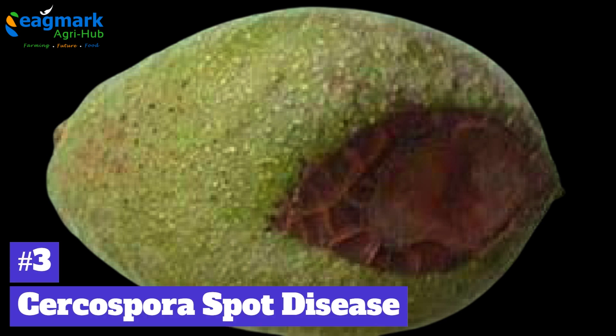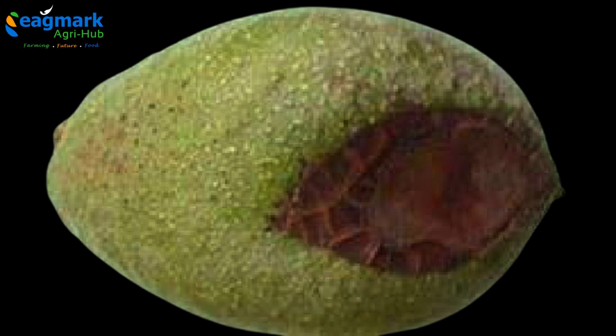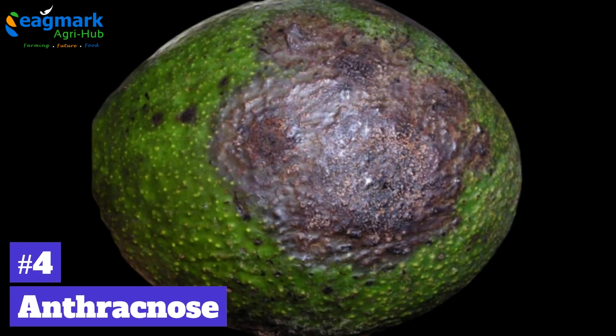Number 3: Cercospora Spot Disease. It is a disease caused by the fungus Pseudocercospora purpurea. It is characterized by irregular, dark brown lesions that run and break over time. Brown spots encircled by golden halos appear on the leaves. Dark brown lesions on the twigs and pedicles might induce early fruit fall.